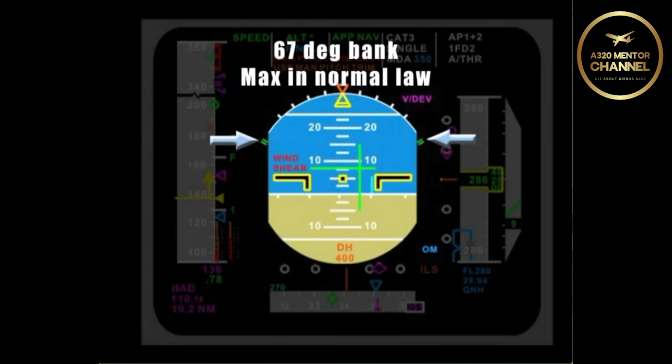The green tick marks are at 67 degrees. That is the maximum angle of bank I can command in normal law. I cannot command any greater than 67 degrees.